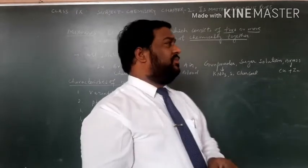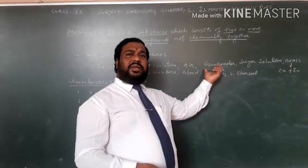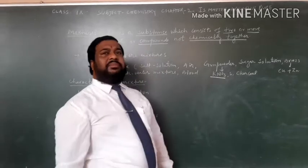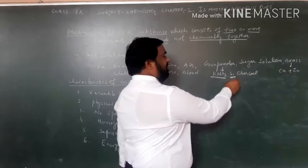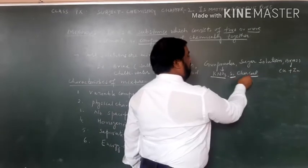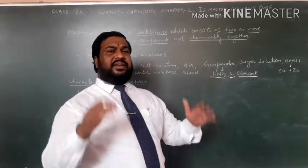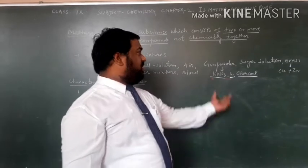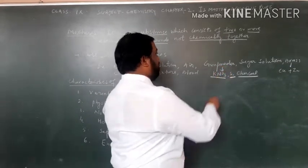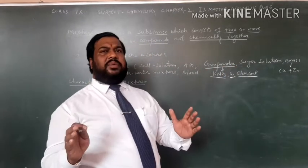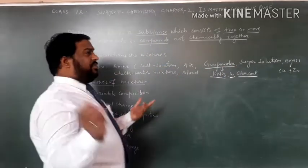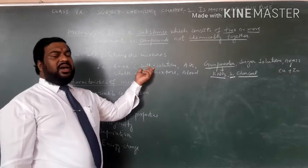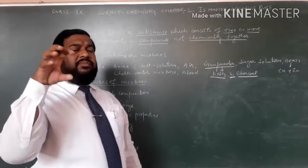Another example: gunpowder. Gunpowder consists of potassium nitrate, sulfur, and charcoal. Charcoal is a form of carbon. These are the constituents of gunpowder, so gunpowder is also a type of mixture. A separate example: brine, it is a solid solution made up of sodium chloride and water.